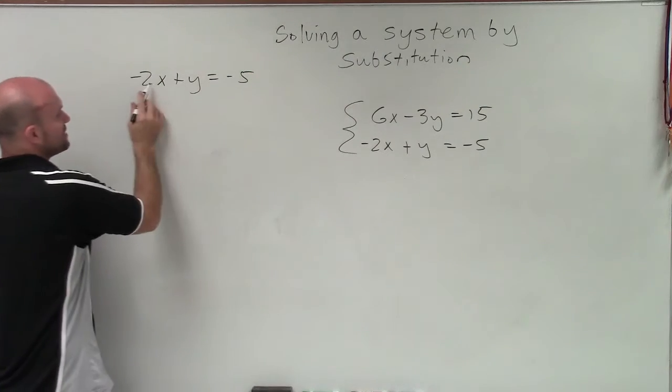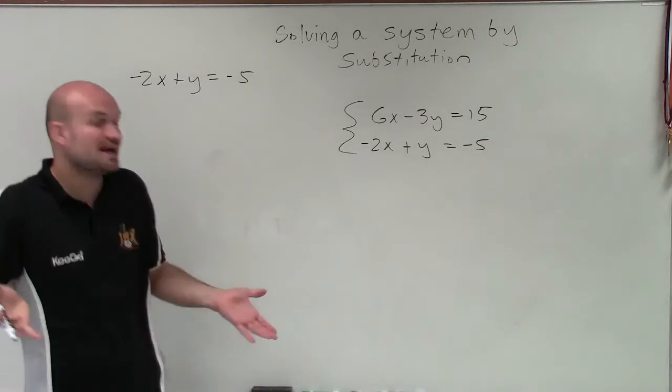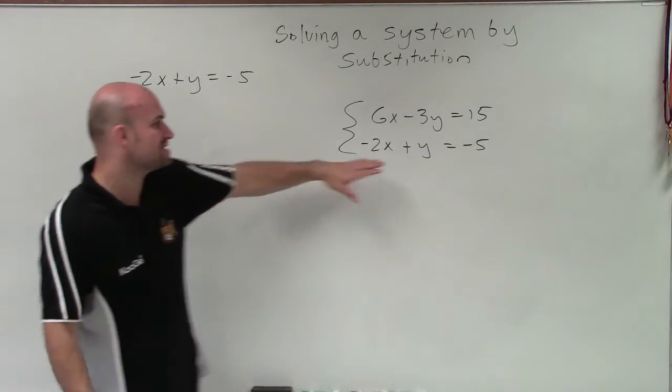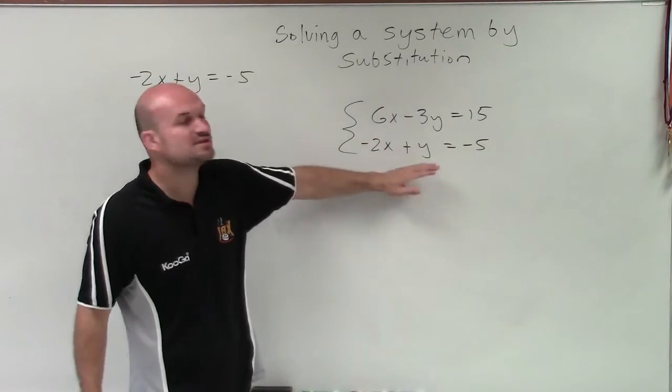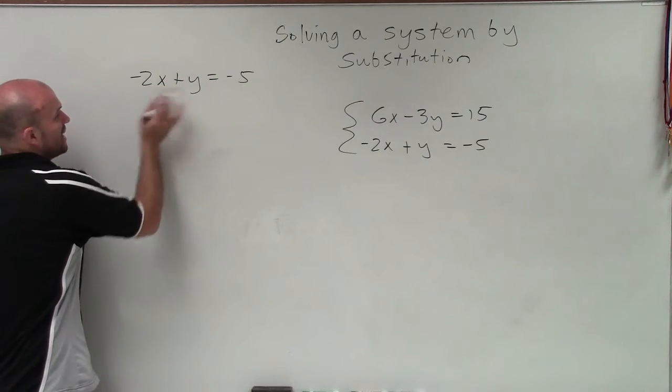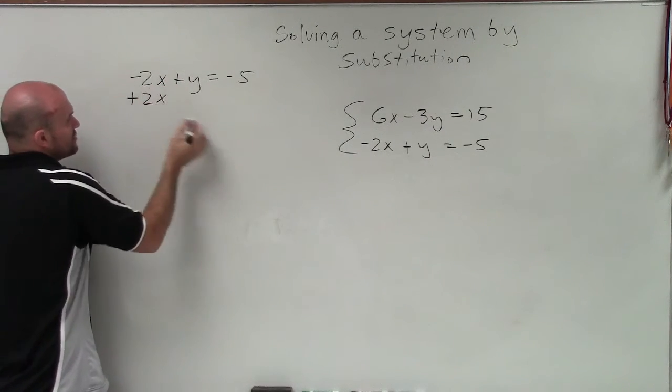And I'm not going to want to isolate the variable x, because it's just going to take extra steps. You can isolate any variable, it just takes extra steps. So it's always nice when applying substitution to use the variable when it has a coefficient of 1 or negative 1, because all I need to do to isolate this is to undo the subtracting of 2x.